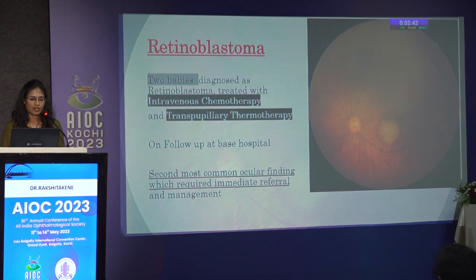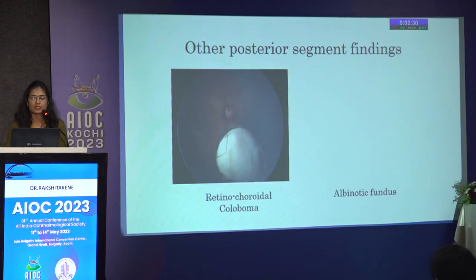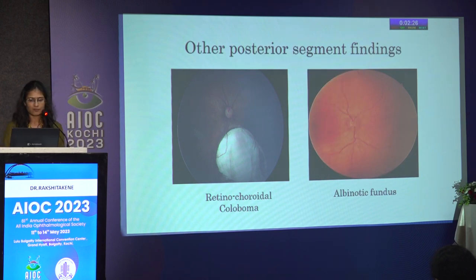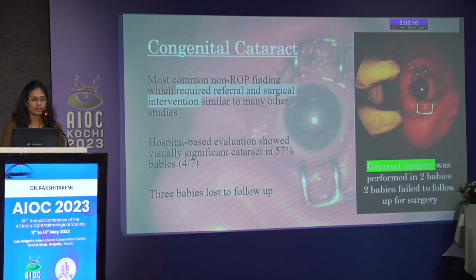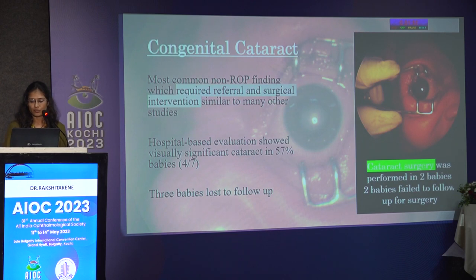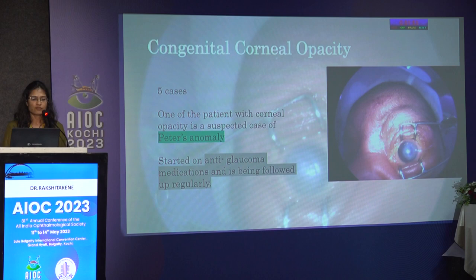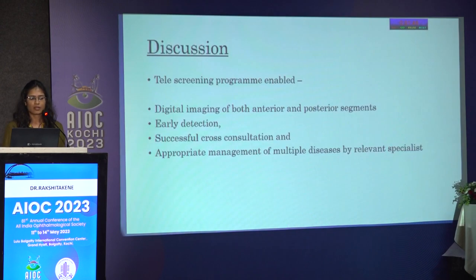Two babies were diagnosed with retinoblastoma and treated with intravenous chemotherapy and transpupillary thermotherapy; they are currently on follow-up at the base hospital — retinoblastoma was the second most common finding requiring immediate referral. Other posterior segment findings included retinochoroidal coloboma and albinotic fundus. 18 eyes of 12 babies had anterior segment pathologies; the most common was congenital cataract, followed by microcornea, corneal opacity, iris coloboma, and microophthalmos. Congenital cataract was the most common non-ROP finding requiring referral and surgical intervention, with visually significant cataract in 57% on hospital-based evaluation. Cataract surgery was performed in two babies; two failed to follow-up for surgery.